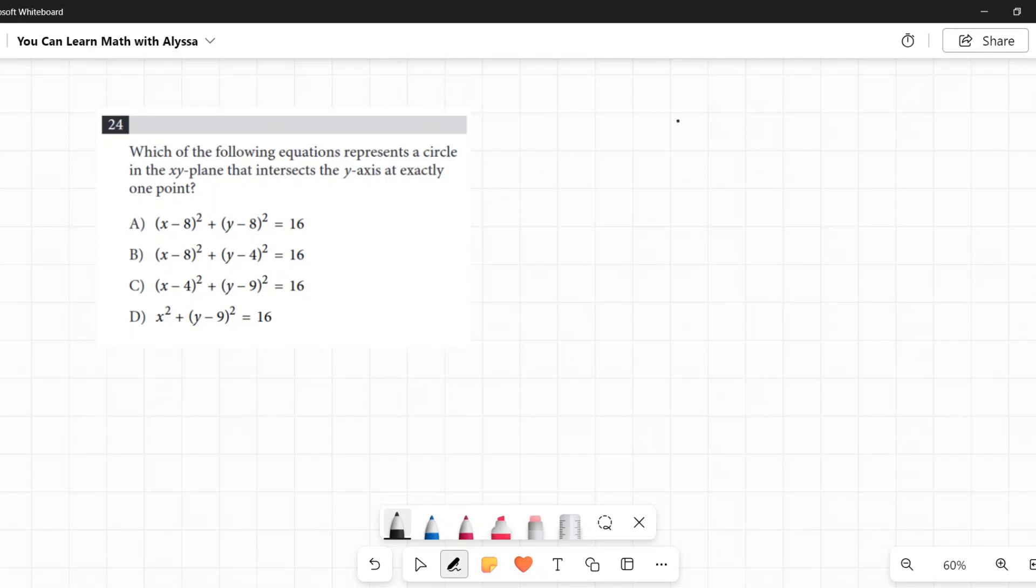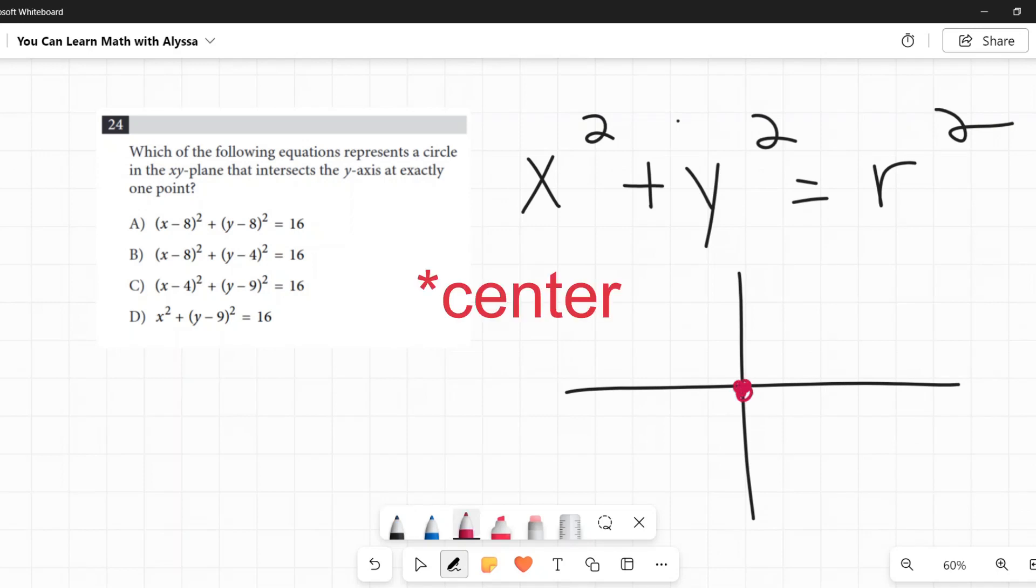When you have a circle, and I'm not going to use these numbers at first, I'm just going to use random numbers. Here is your baseline for a circle: x squared plus y squared equals r squared. That is a circle with its vertex at the origin, and that r squared is the radius squared.